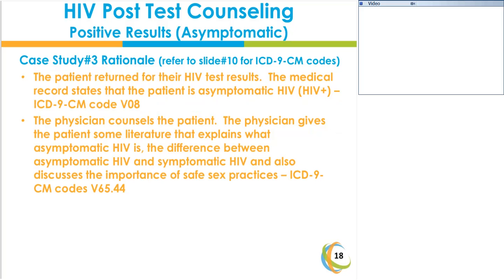The rationale: The patient returned for test results and was advised they were HIV positive. Code V08 reflects HIV positive status. The patient was counseled on the difference between asymptomatic HIV and symptomatic HIV — V65.44. You could also add the high-risk sexual behavior code V69.2, but it is not necessary.